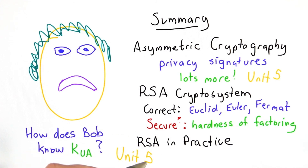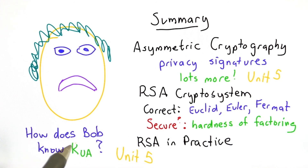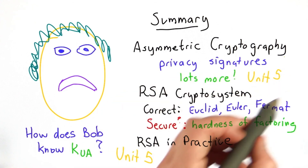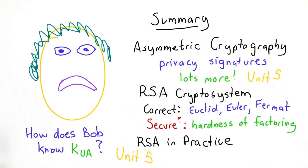So that's one of the things we'll talk about next unit: how to build a public key infrastructure so Bob can learn Alice's public key, as well as lots more interesting applications of asymmetric cryptography. Hope to see you back for Unit 5.